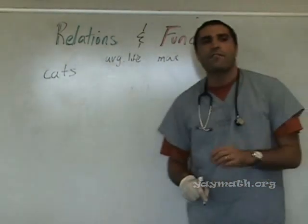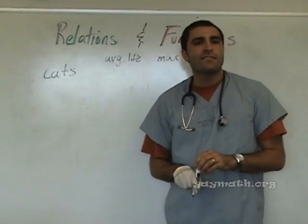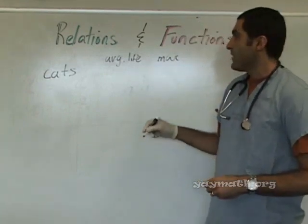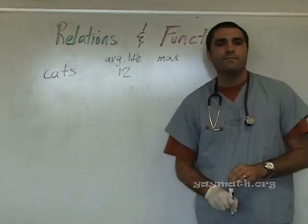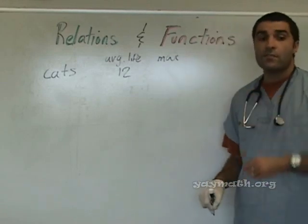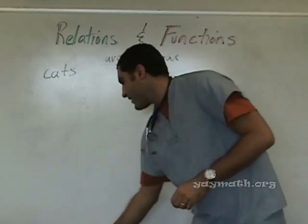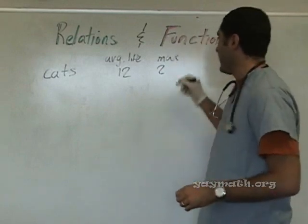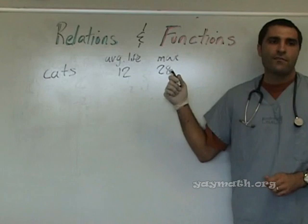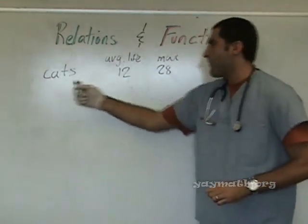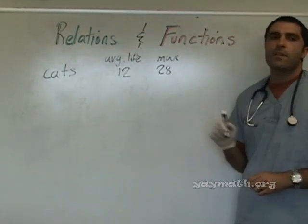Can anyone guess what the average life of a kitty cat is? Twelve. It is twelve. Wow. That's good. And what is the maximum life of a kitty? Eighteen. Twenty. Twenty-five. Twenty-eight, actually. Twenty-eight. I'm like a cat. Twenty-eight, yeah. Okay, so basically we're relating two pieces of information. For cats, the average life is this, and the maximum life is that.